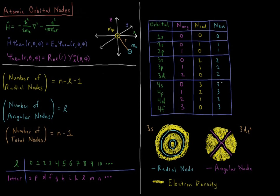For N equals four, there are three total nodes split between radial and angular values. L equals zero, one, two, three, determining the number of angular nodes, and the number of radial nodes filling up the rest.